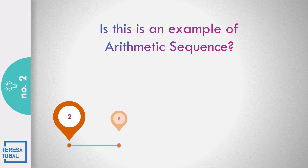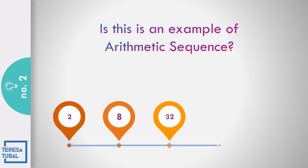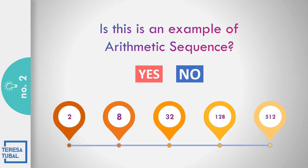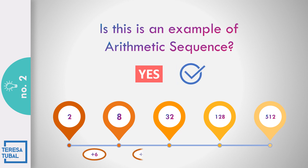Question number two: 2, 8, 32, 128, 512. Is this an example of arithmetic sequence? No. Correct. Because there is no common difference for question number two.